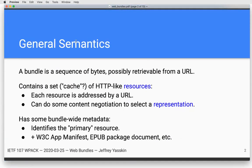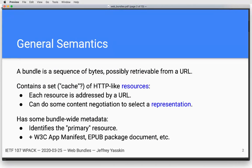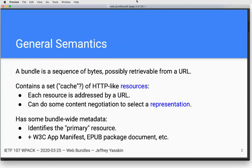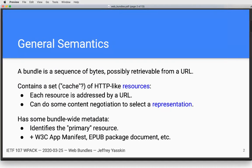The general semantics of a bundle are that it's a sequence of bytes or a file that might be retrieved from a URL, might be stored on local disk, or whatever. It contains a set — which I've sometimes been thinking of as a cache — of HTTP-like resources. Each resource, like in HTTP, is addressed by a URL. There's some support in the format for content negotiation, currently expressed with Mark Nottingham's variance headers, but that has changed at least once and could change again.